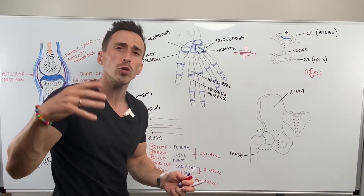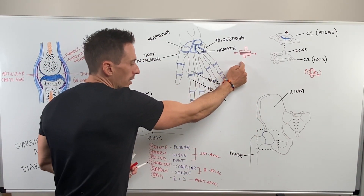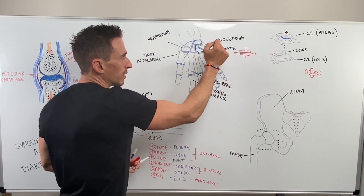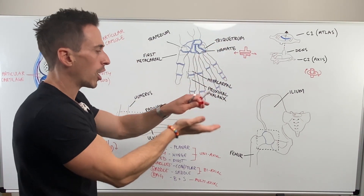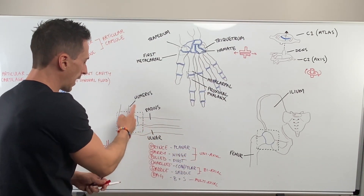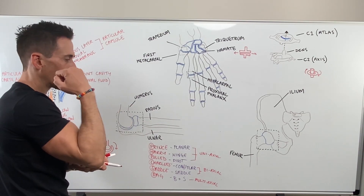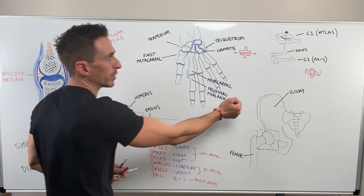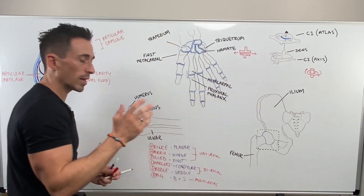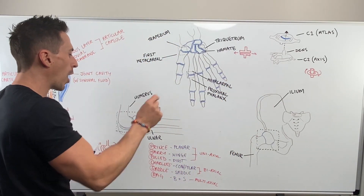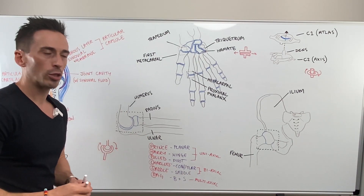Those are all the uniaxial joints: the planar joint at the triquetrum and hamate just glides; the hinge joint at the elbow swings open and closed like a door; and the pivot joint at C1 and C2 just turns around. Now let's move on to the biaxial joints. First of the biaxial is the condylar joint.